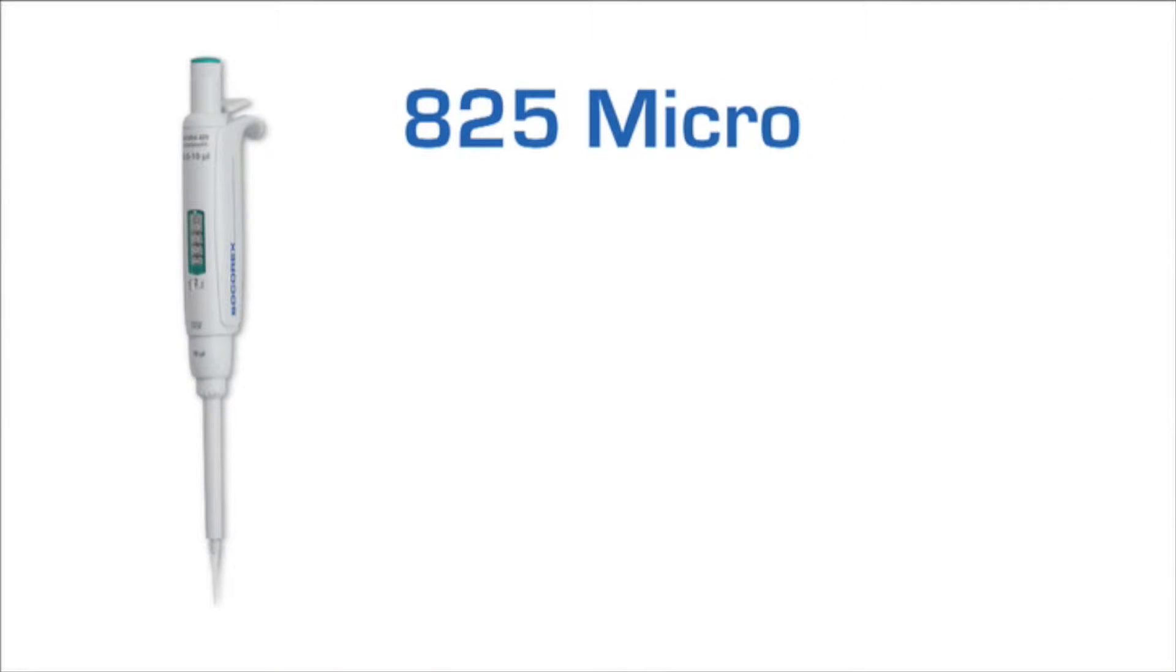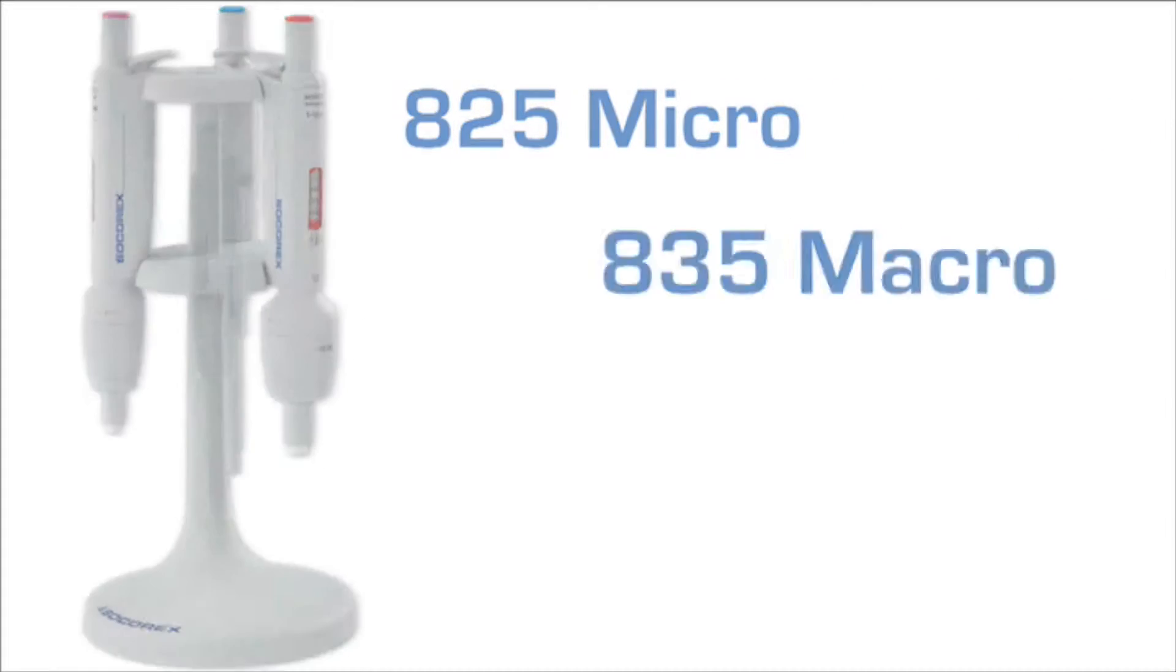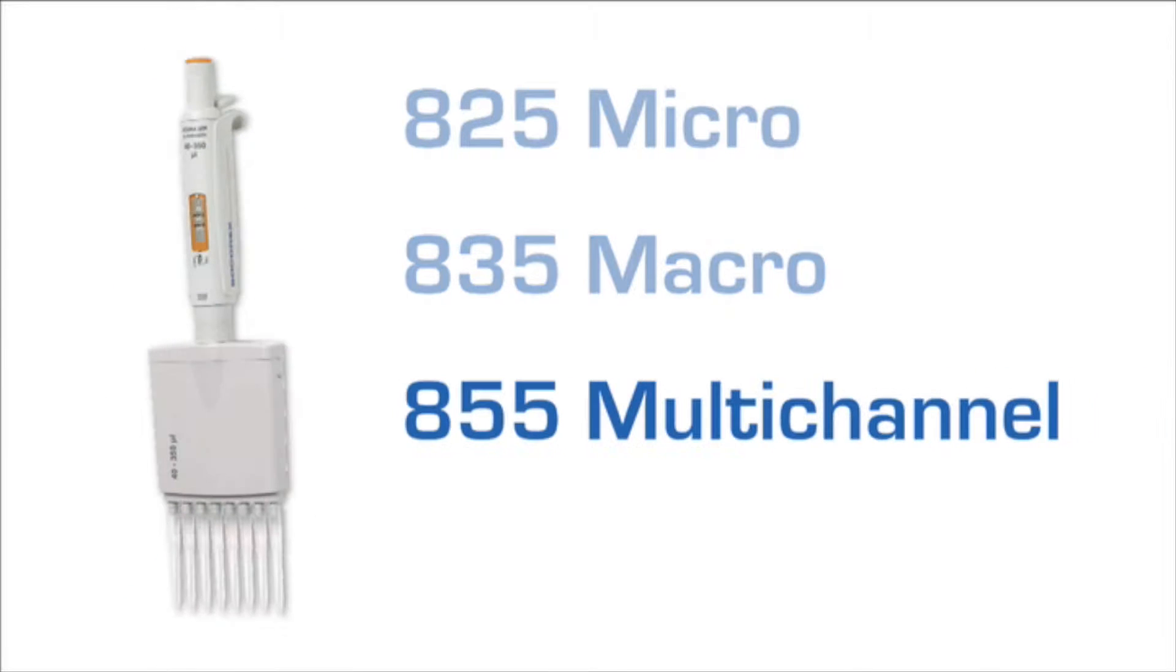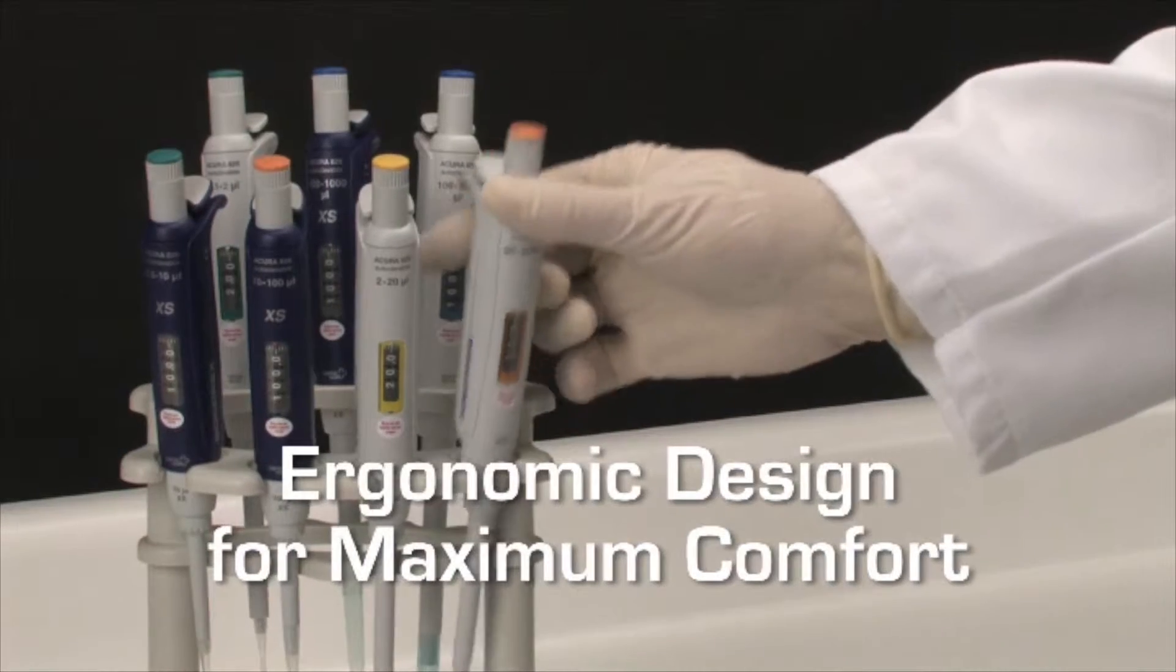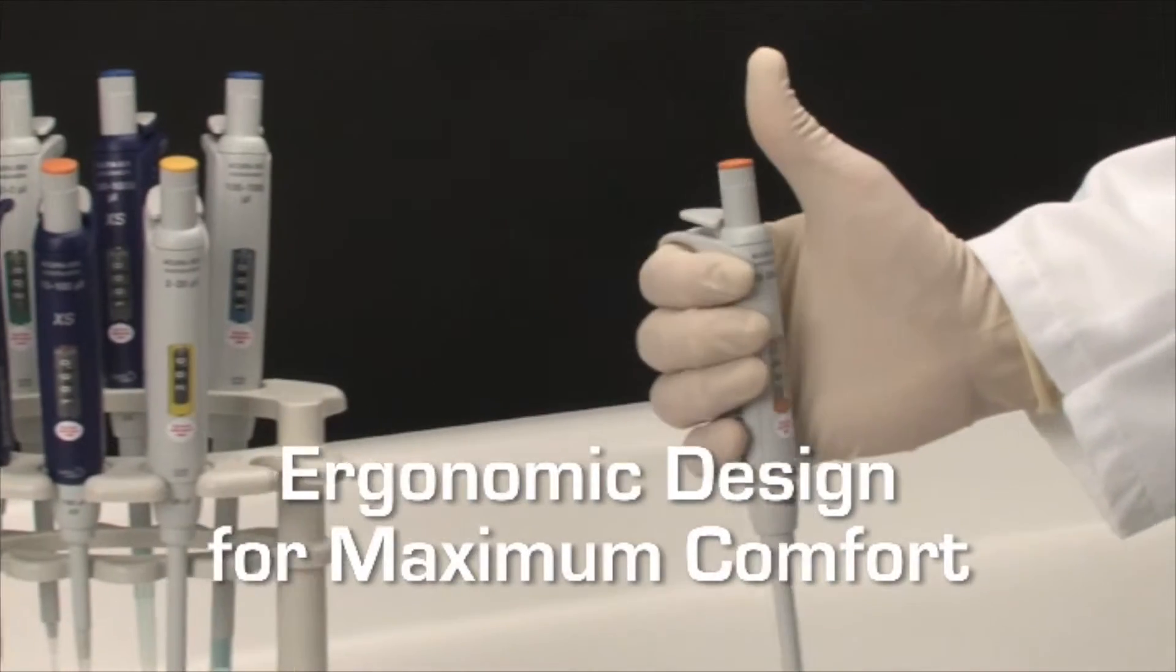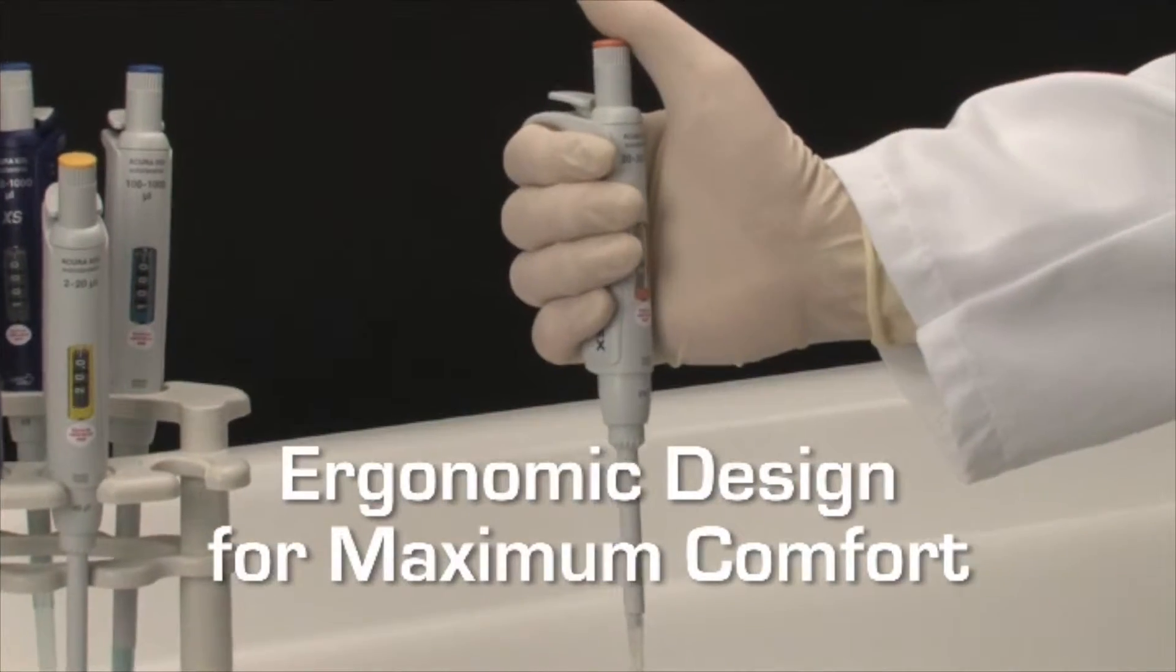Available in the well-known 825 micro, 835 macro, and 855 multi-channel models, and introducing the new 826 XS model for enhanced performance and research applications, Acura manual pipettes are designed and engineered to be comfortable and user-friendly as well as easy to maintain.